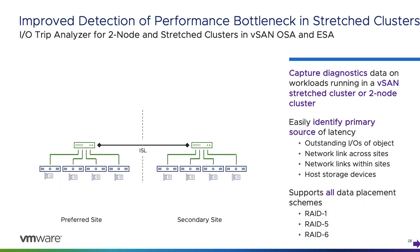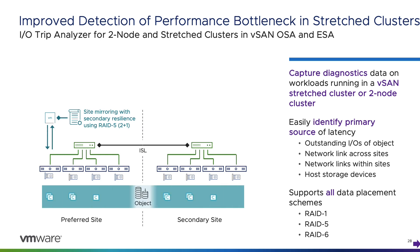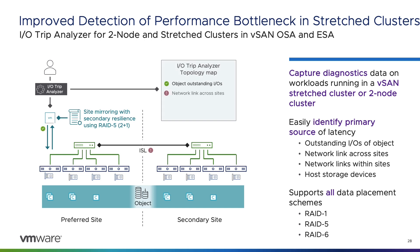Recent versions of vSAN made it easier to identify the source of a performance bottleneck. The vSAN IO Trip Analyzer is one of those helpful tools, and with vSAN 8 Update 2 we've enhanced its capabilities to perform analysis on workloads running in a vSAN stretched cluster. A user can now easily determine where the primary source of latency is occurring in a vSAN stretched cluster, as well as latencies in other parts of the stack that may be contributing to overall latency seen by the VM.